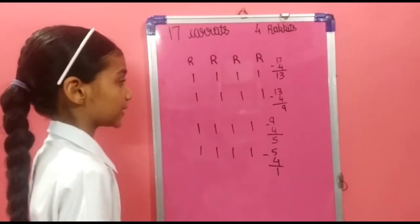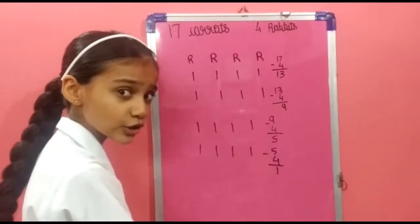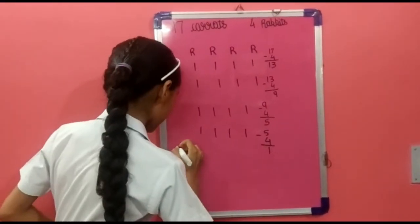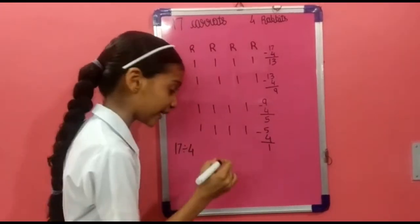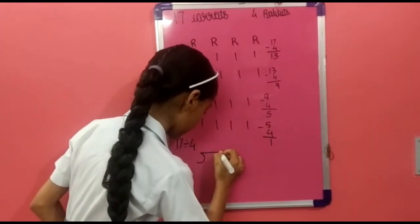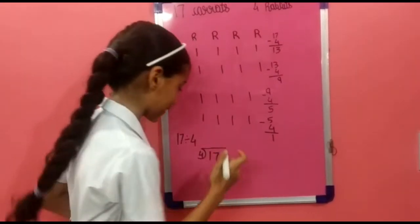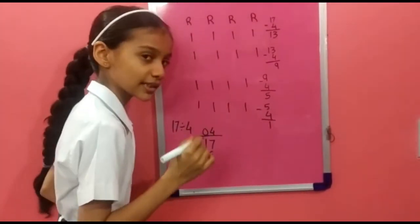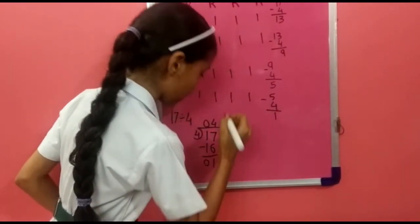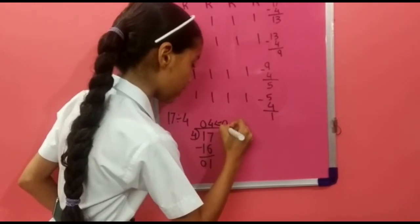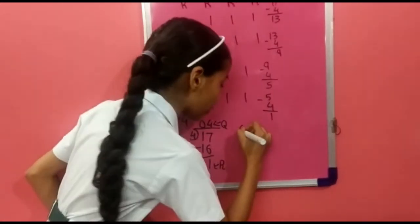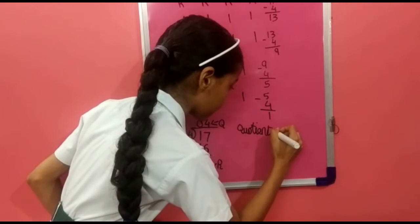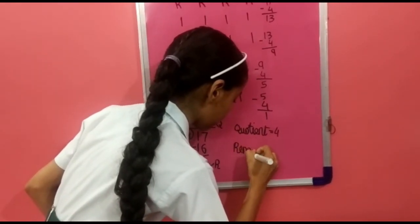This is called division, which you can see works like repeated subtraction. So you write it in this way: 17 divided by 4. 4 times 4 is 16, and 17 minus 16 is equal to 1. The answer is called the quotient, and the leftover is called the remainder. The quotient is 4 and the remainder is 1.